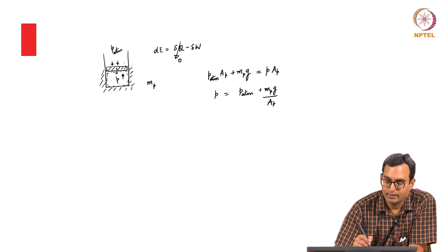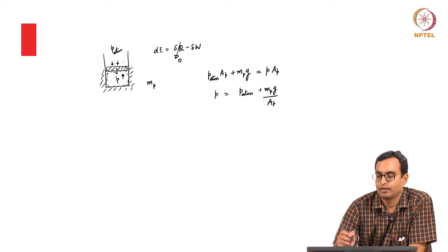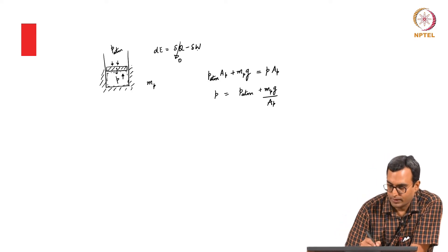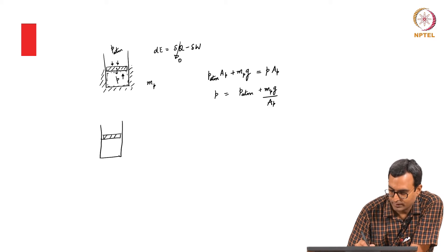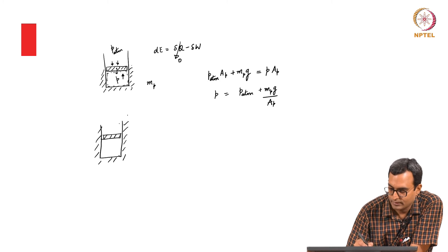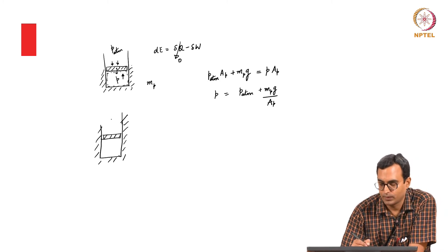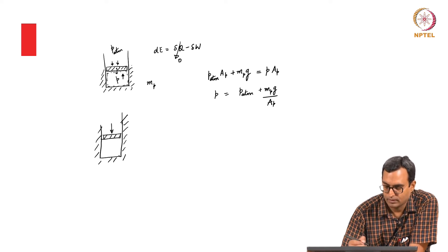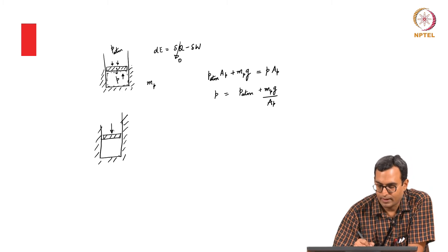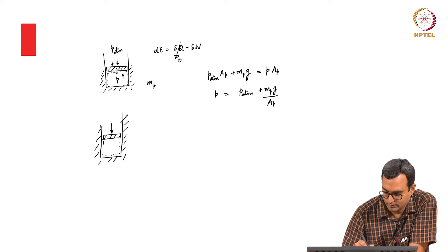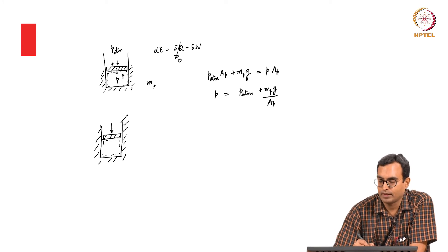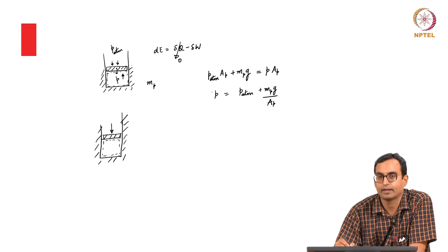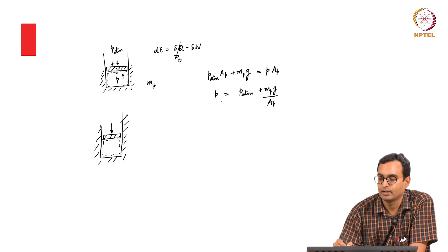Now, if by applying some other force we make this piston move, we can calculate what the work would be. In order to make it move, there has to be some other force. We can apply an external force either upwards or downwards. If I apply a force downwards, I can compress this adiabatically. Initially the force needed to start compression must be slightly higher than area times the pressure inside.